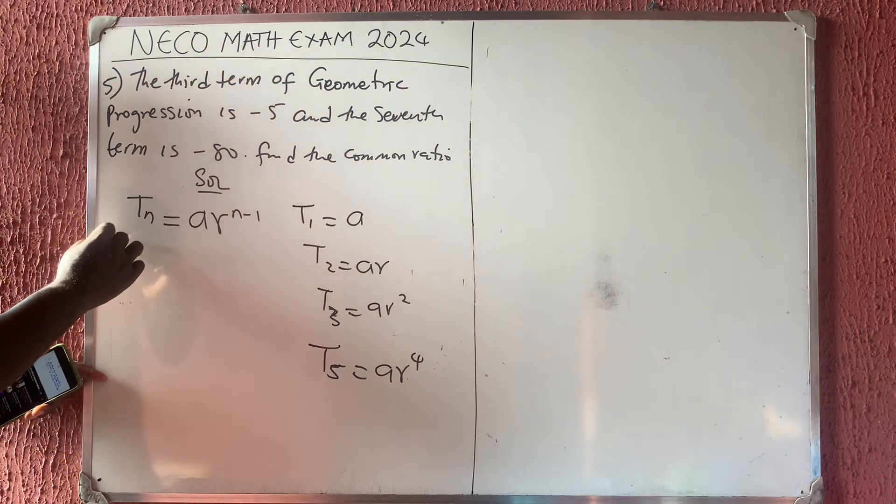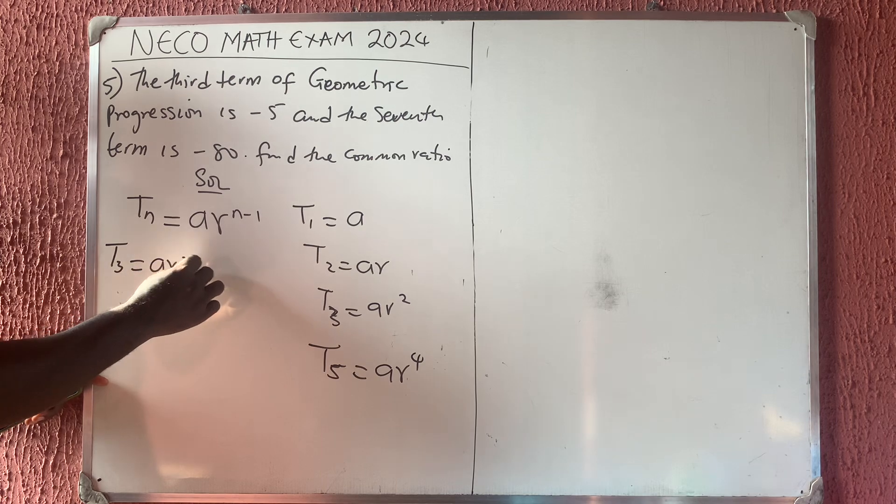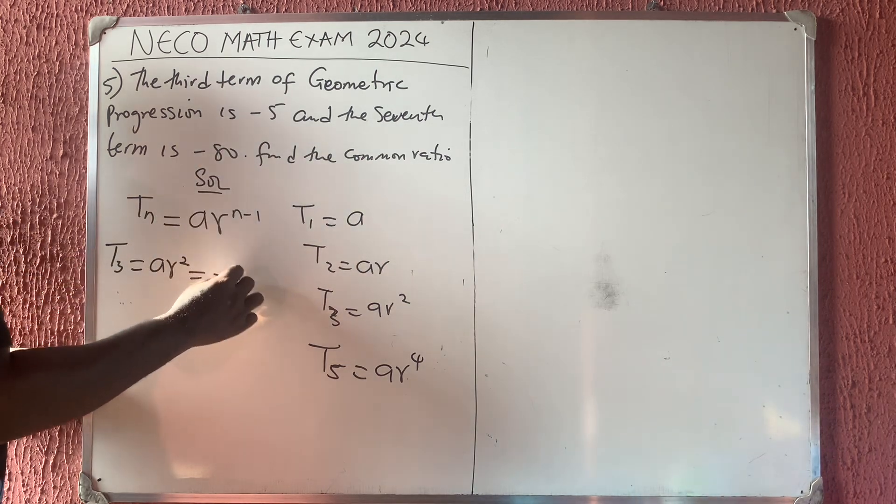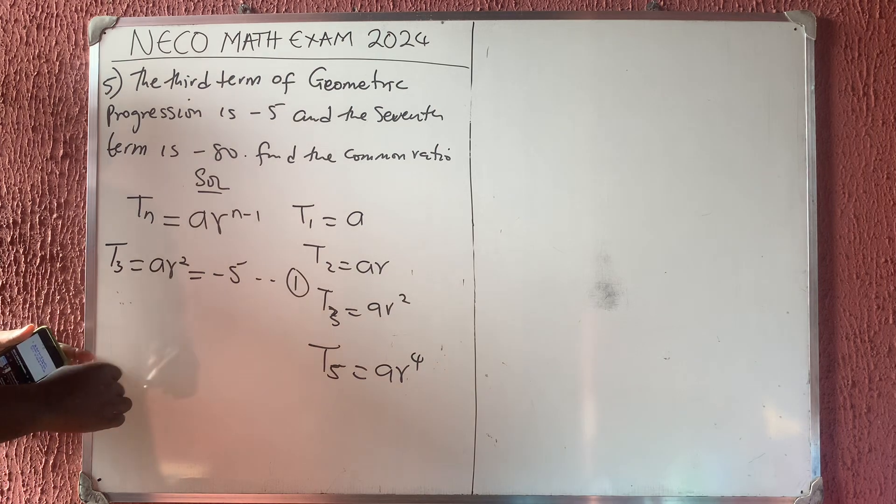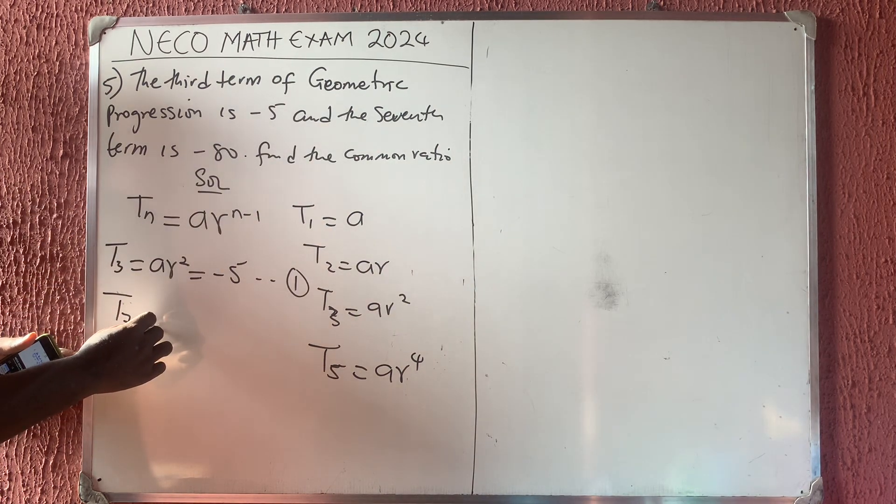So therefore, the third term here, T3 is equal to A R squared, which they say is equal to minus 5. Let me call it equation 1. And then the seventh term, T7. What do you think it would be normally from the formula?